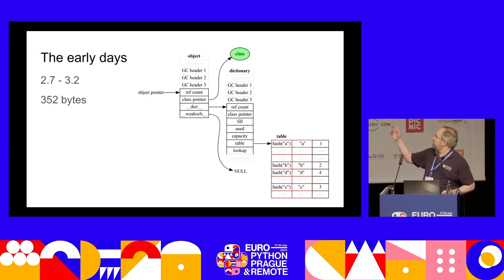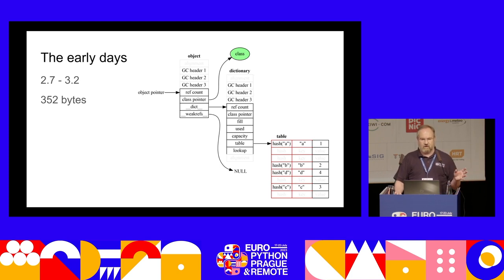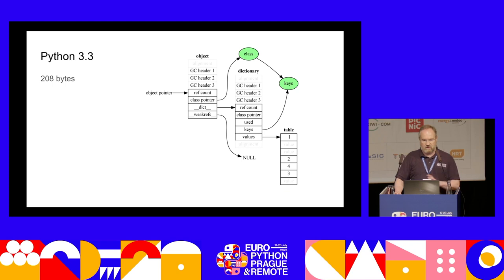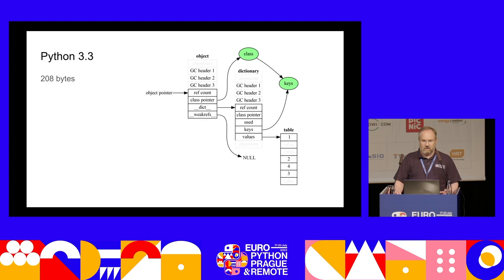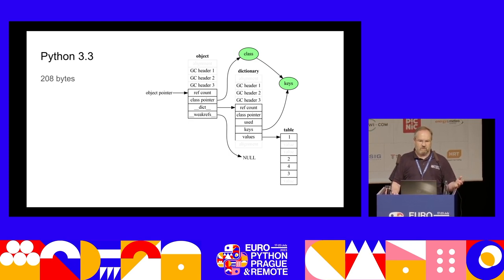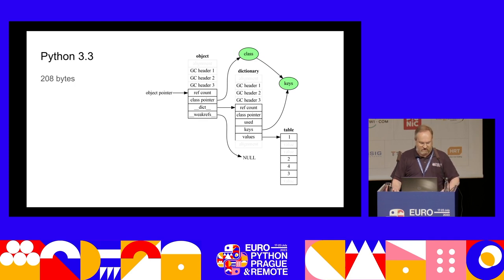If you have a thousand objects of the same class, they all share the same hashes and keys in the dictionary table. So in Python 3.3, we started sharing those between instances. Now we just have a table with the values, and the keys are shared across all instances of the class. Since the keys are shared, if you have a thousand instances, the shared portion effectively costs nothing per object.